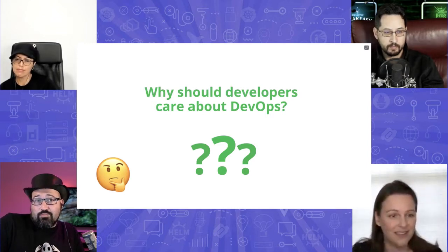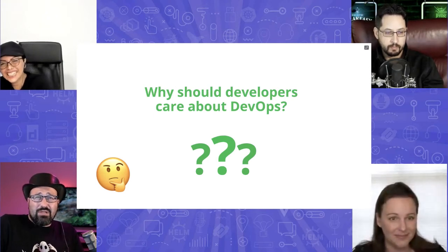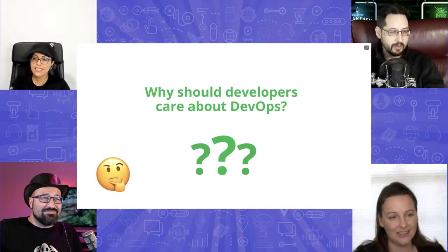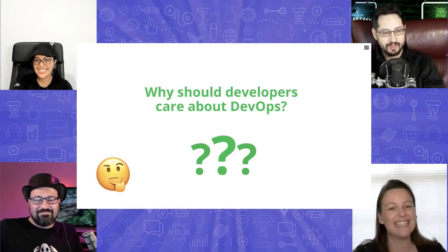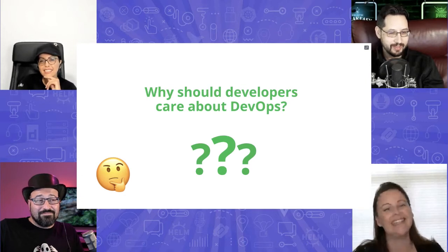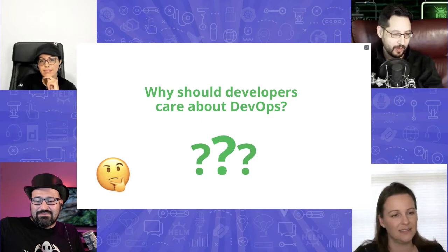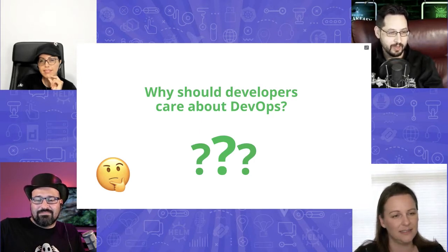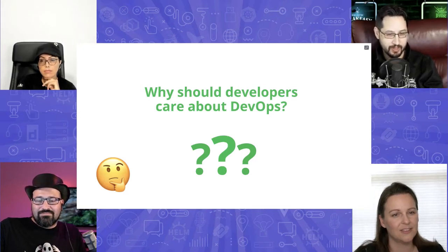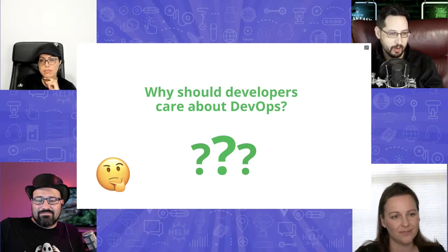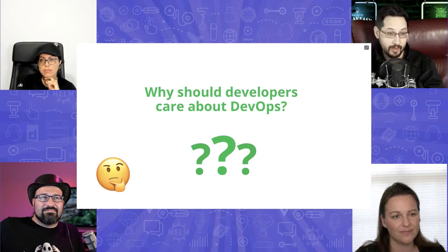Having these silos where you just throw code over the wall and let ops handle it — that's just not the best way to do things anymore. If you look at this from a selfish perspective, what we all care about is how much we get paid as developers. If you look at the Stack Overflow survey, full stack engineers and back-end engineers get paid quite well, but DevOps engineers and site reliability engineers are actually even higher paid than development positions. Learning cloud native skills and getting really good at deploying to cloud or hybrid environments is a way of improving your career and getting paid more.